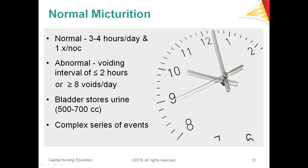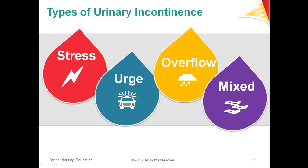It's important to know what's normal. Average urine output is somewhere between 800 and 2,000 cc's a day. So when we talk about someone being totally incontinent, that's a lot of moisture in 24 hours to deal with. When we talk about urinary incontinence, there are really three kinds — plus a mixture of them as well.